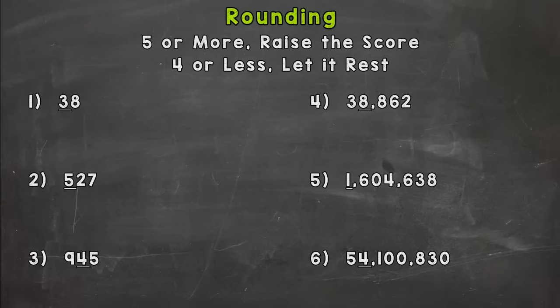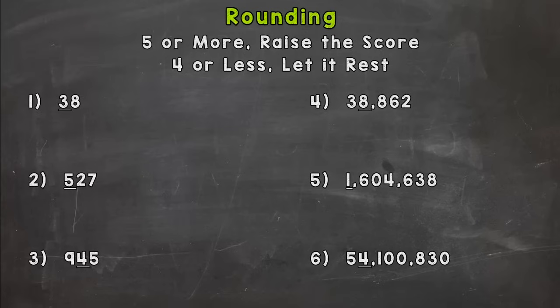At any point, if you feel confident enough to go ahead and do some on your own, press pause and finish whatever's left. When you're ready, press play and check your work with mine. If you want to do all six along with me, that's fine as well. So let's jump into rounding. We have our rounding rules up top: five or more, raise the score; four or less, let it rest.